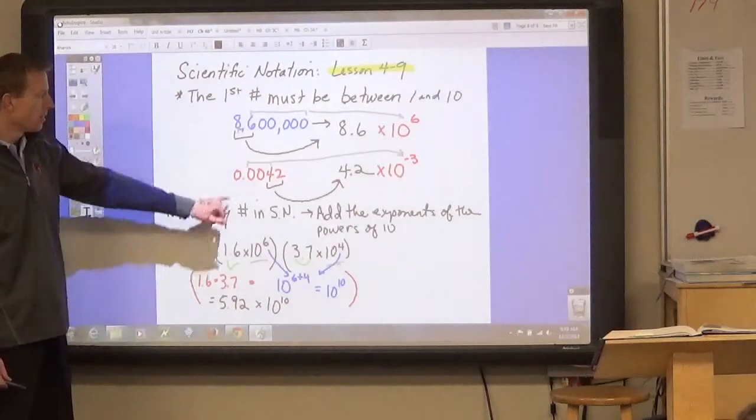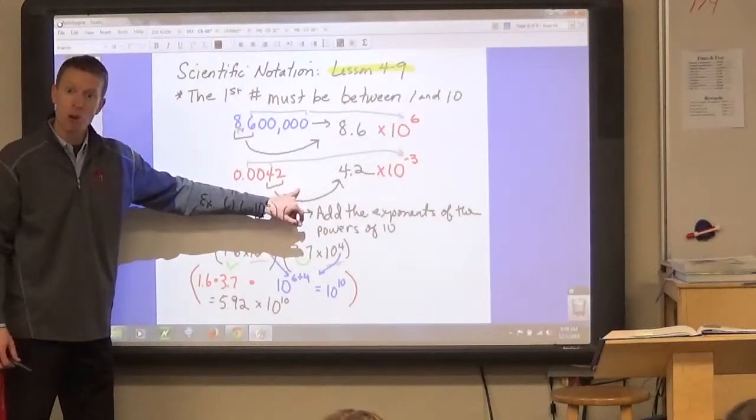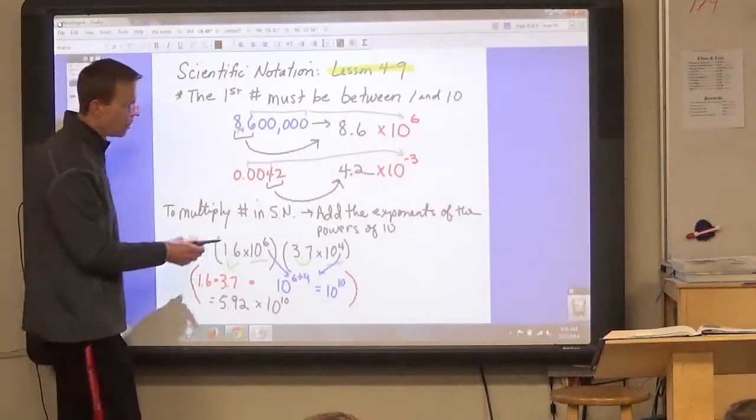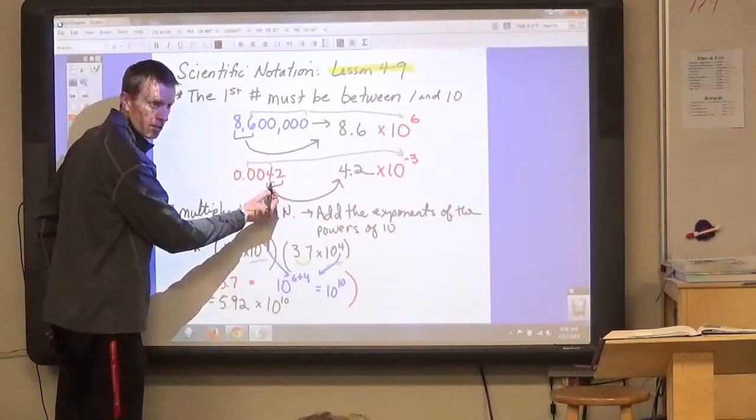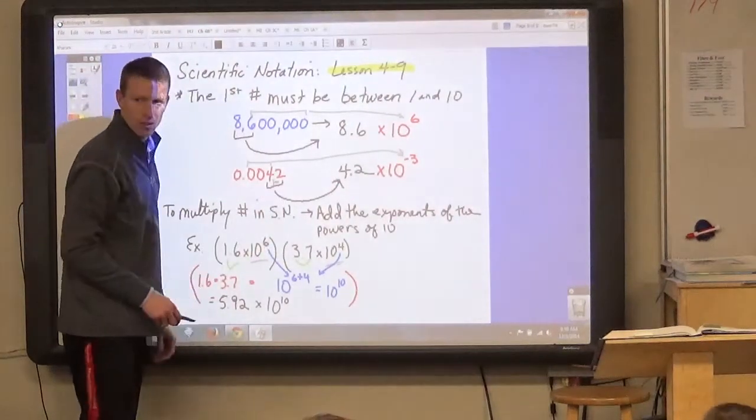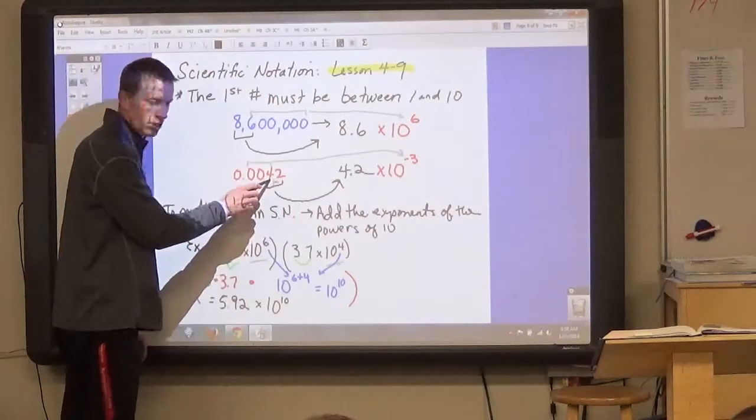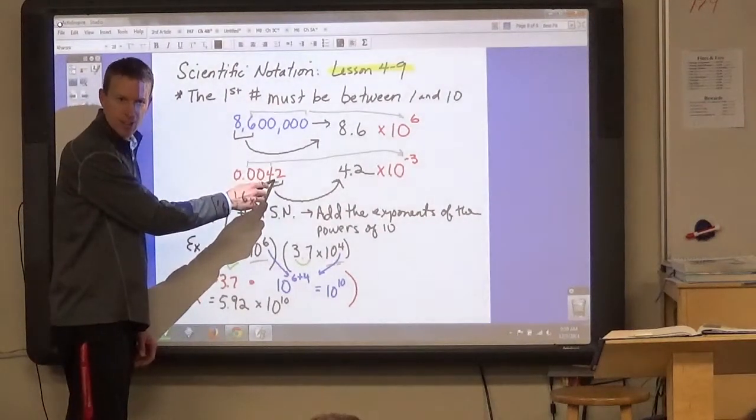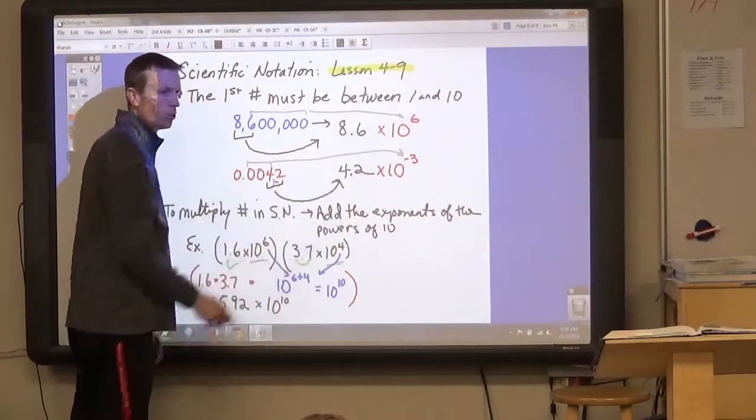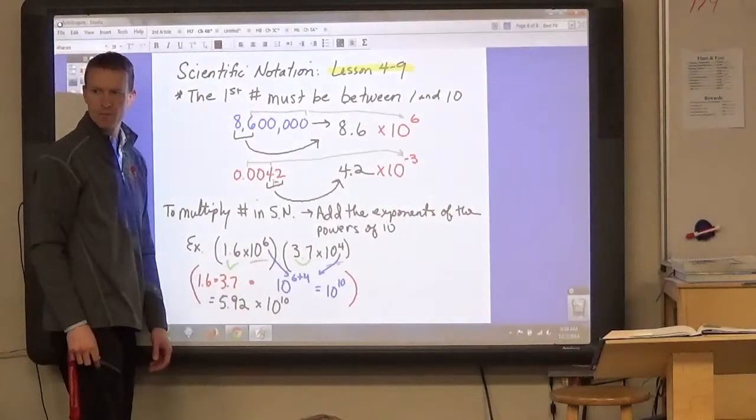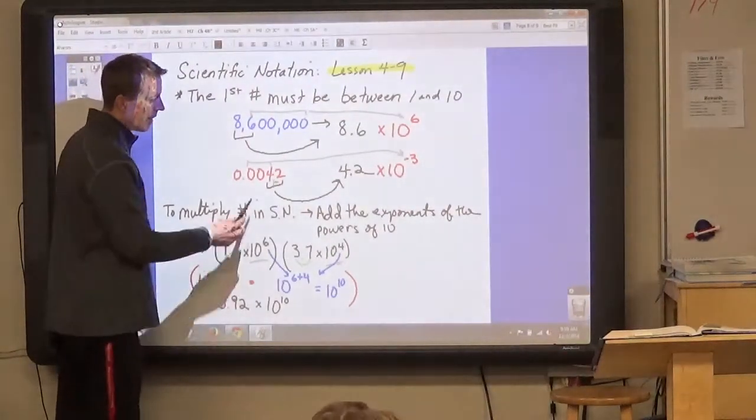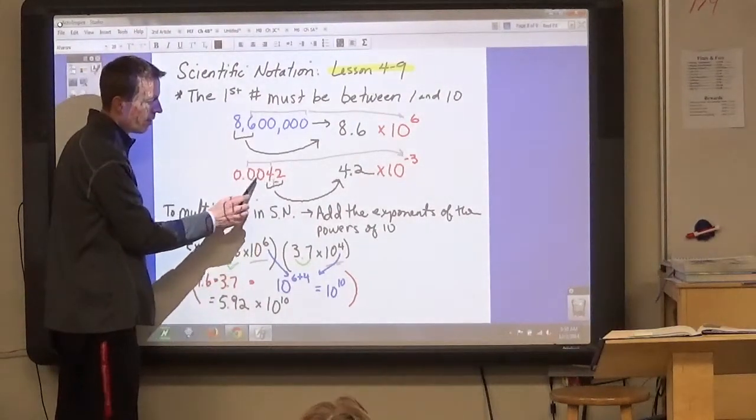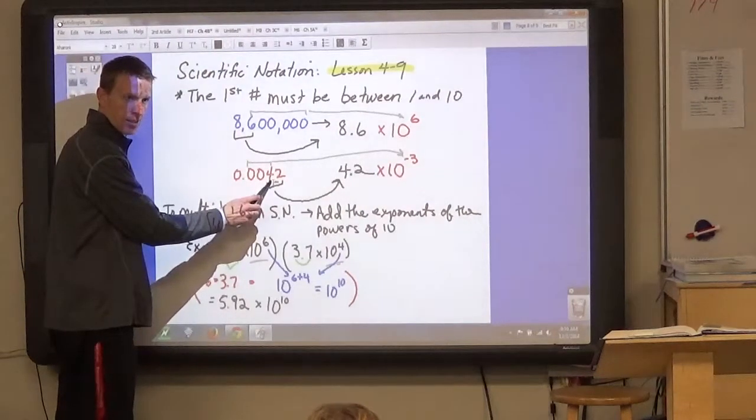This is another really small number that we could write into scientific notation. Again, we would need to put the decimal point after the first non-zero digit. So here's the first non-zero digit. We'd put the decimal point after that to make it 4.2. Then, count the places to that decimal point.